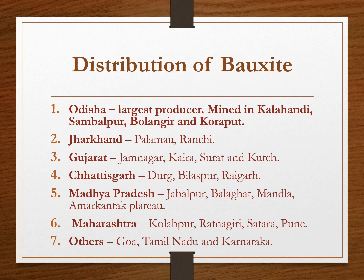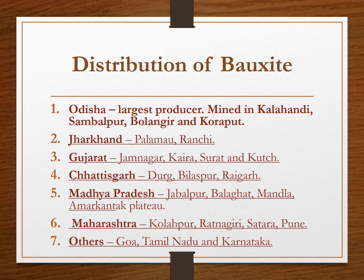Regarding the distribution of bauxite, Odisha is the largest producer. Kalahandi and Sambalpur are the leading producers and Bolangir and Koraput have been increasing their production. Other major producers are Jharkhand with deposits in Palamu and Ranchi; Gujarat mainly in Jamnagar, Kaira, Surat, and Kachchh; Chhattisgarh mainly in Durg, Bilaspur, and Raigarh; Madhya Pradesh with deposits in Jabalpur, Balaghat, Mandla, and Amarkantak plateau; and Maharashtra mainly in Kolhapur, Ratnagiri, Satara, and Pune.